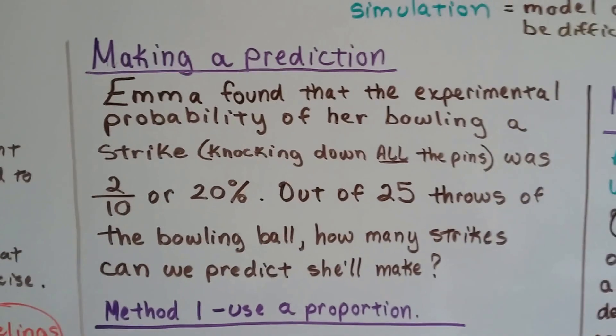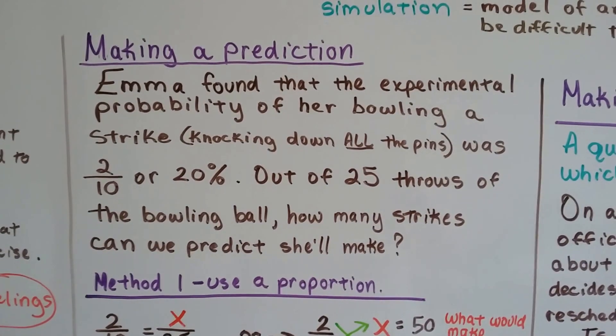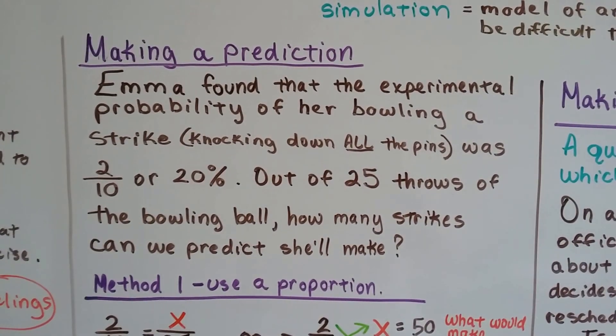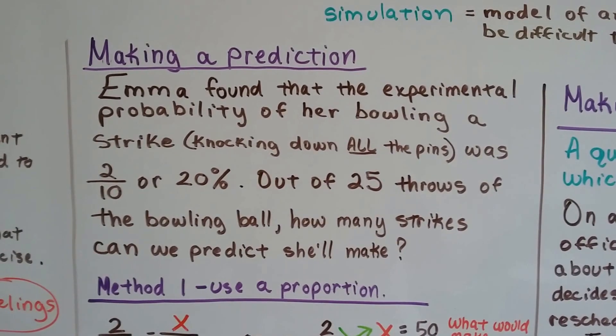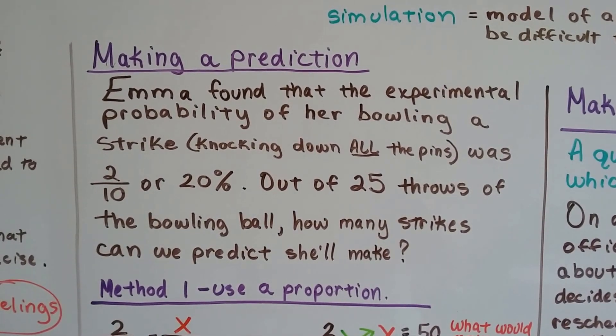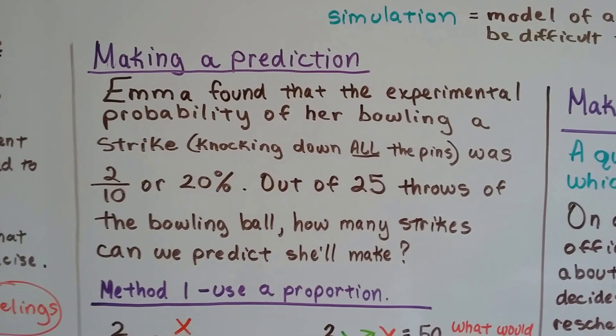Now, in general, making a prediction. Emma found that the experimental probability of her bowling a strike, knocking down all the pins, was 2 tenths, or 20%. Out of 25 throws of the bowling ball, how many strikes can we predict she'll make?